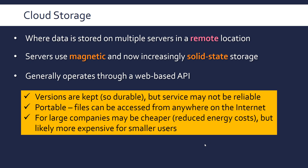Often multiple versions of files are kept by cloud storage providers, so if you need to go back to an old version that's usually possible — which counts as a durability advantage. However, depending on which provider you choose, the service might not be reliable. Most cloud storage providers are reliable because there are huge startup costs involved, making it hard to just launch one, so they tend to be well-established. But servers can go down, which is a concern.